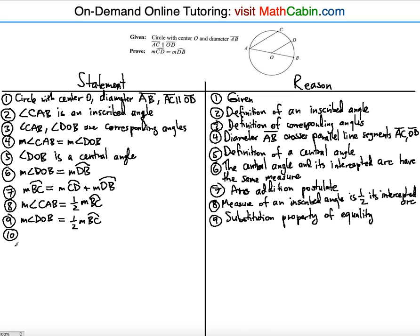The tenth step: since in step six we said the measure of angle DOB equals the measure of arc DB, we substitute to get: measure of arc DB equals one half the measure of arc BC. The reason is again the substitution property of equality.